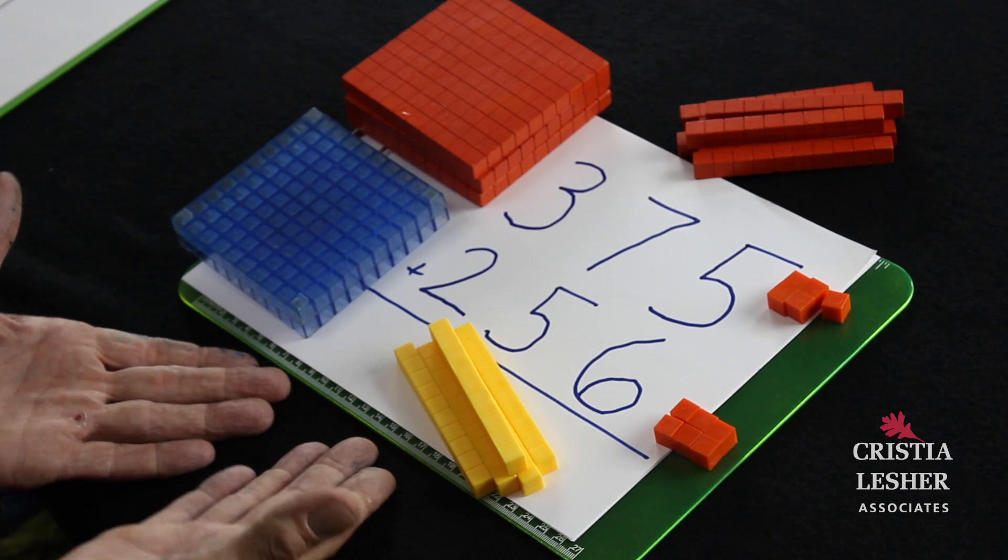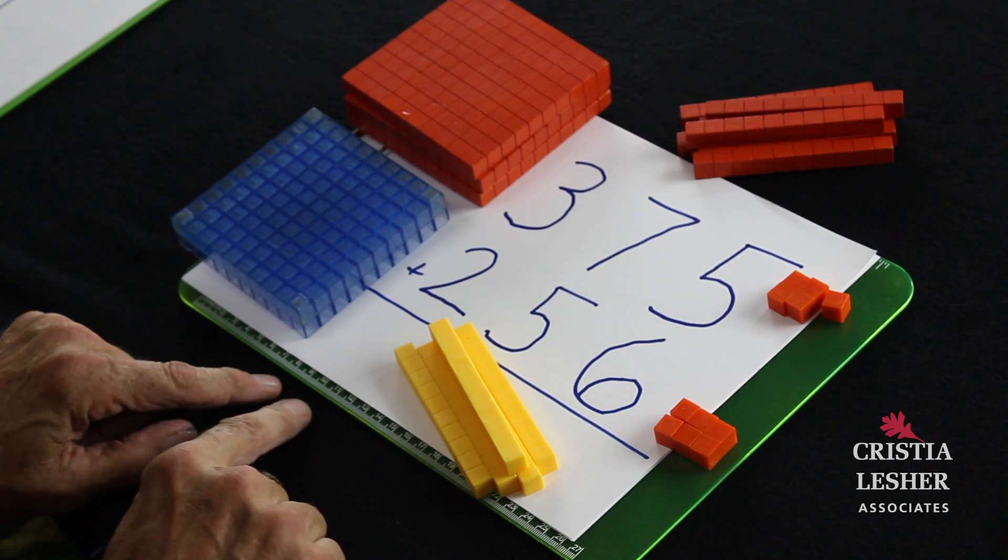This video is going to show the power of understanding place value when adding 3 and 4 digit numbers. Please take a look at the example that I have here: 375 add 256.